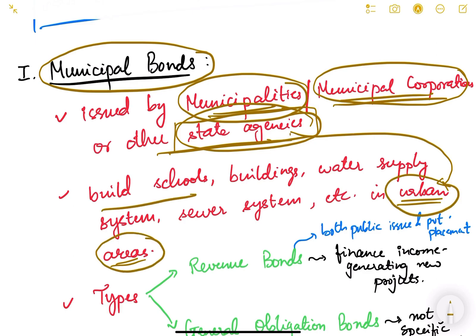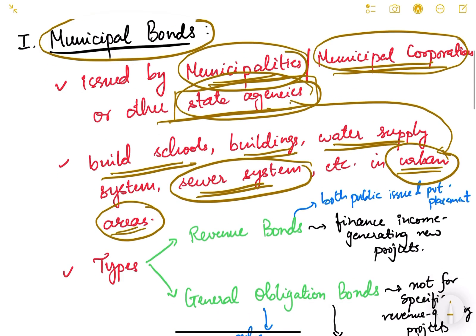The works funded by municipal bonds can include building schools, different buildings, water supply, sewer systems — meaning drainage systems — roads, bridges, drainage systems, and repair and maintenance. These are the different kinds of works which can be done by issuing municipal bonds.